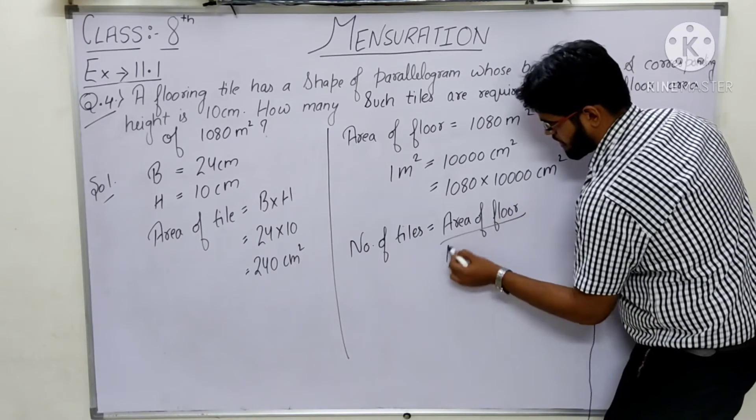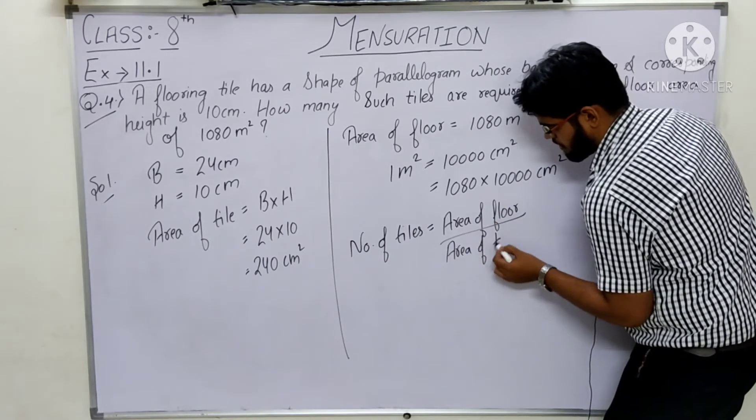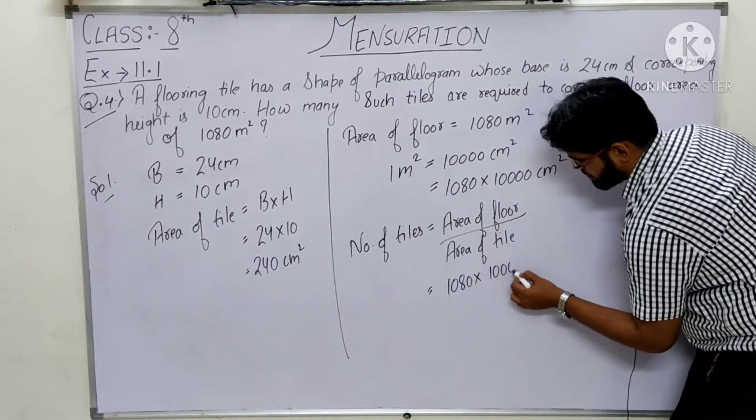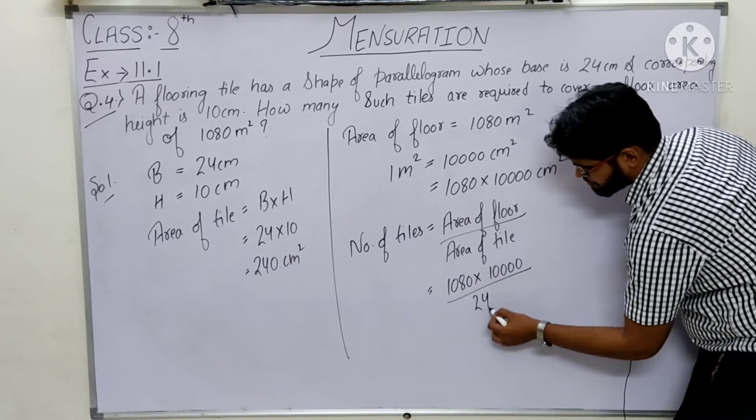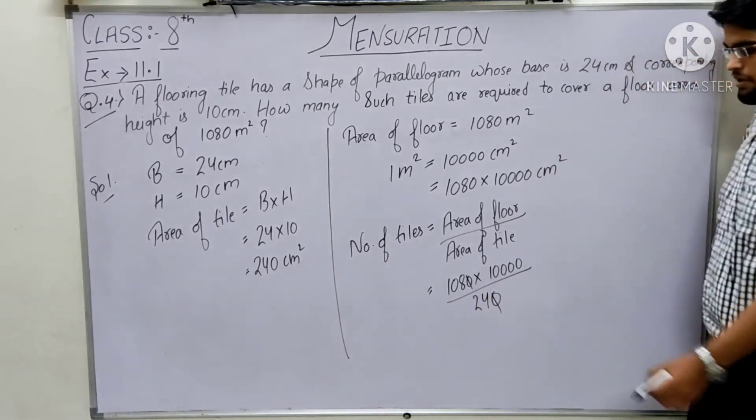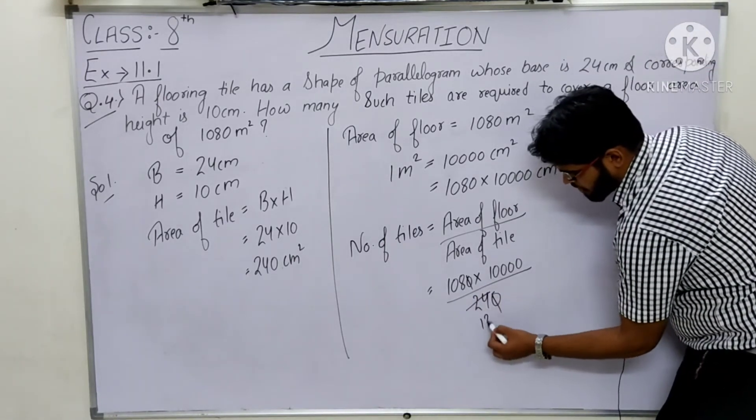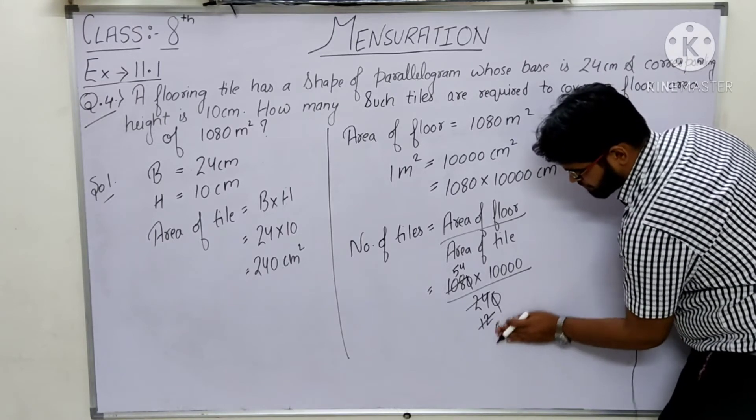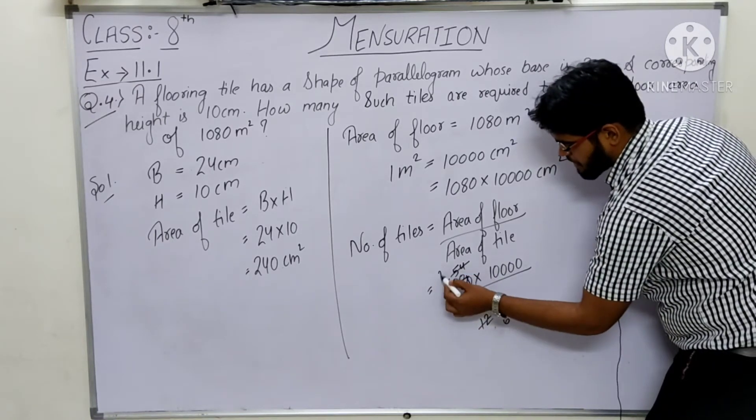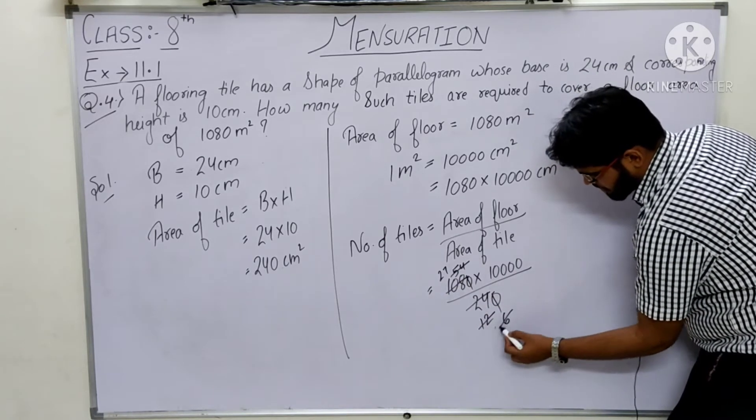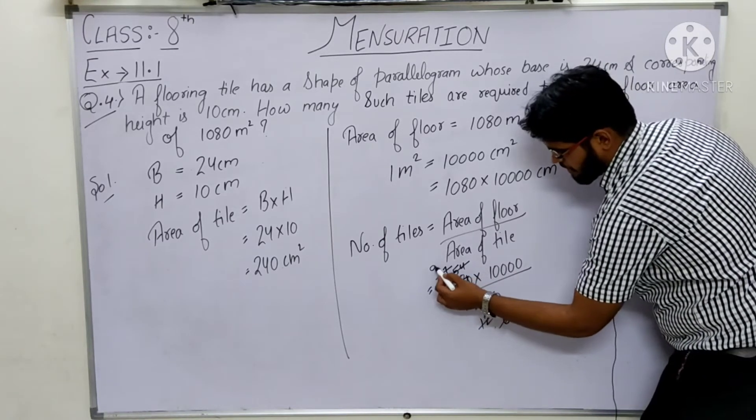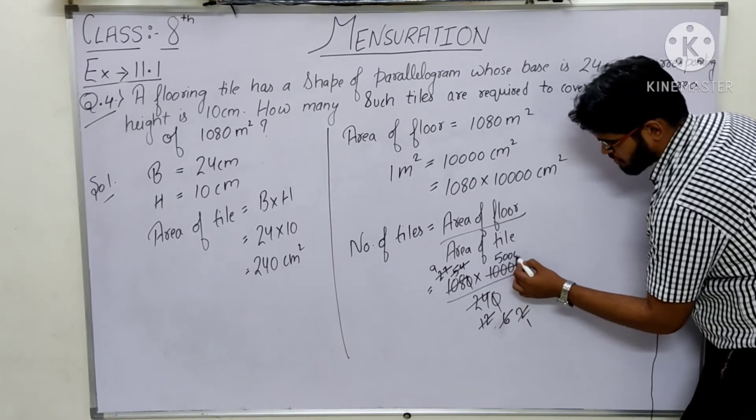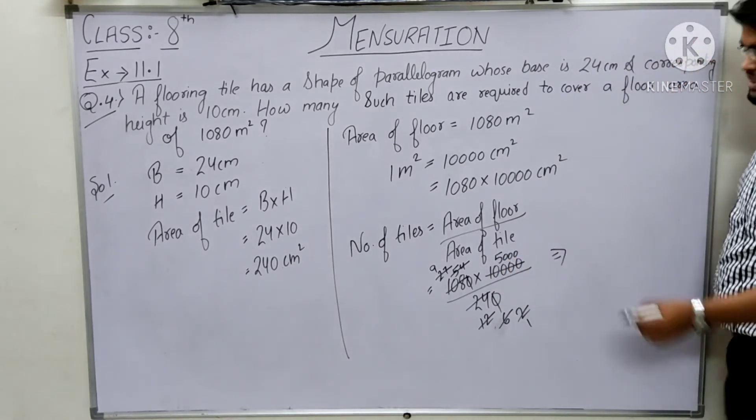That is 1080 into 10,000 divided by 240. Cancel by 2: 12 times 54. Then cancel by 2 again: that is 6 and 27. Now by 3: that is 2 and 9. Now cancel by 2: 1 and 5000. So 9 into 5000, that is 45,000.